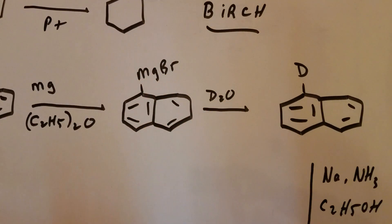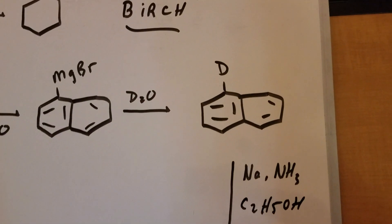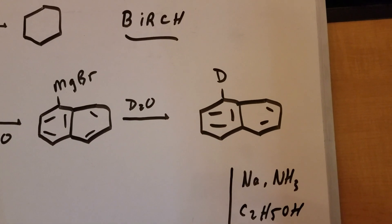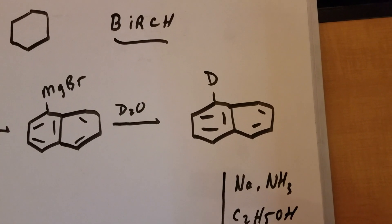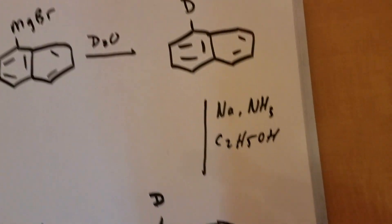Now I do my Birch reduction. And as you can see, when I did the Birch reduction, you get your isolated molecule. Now, this is a triene. Now, here's where it gets a little tricky.